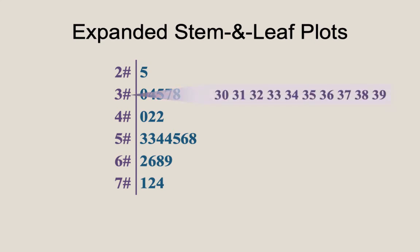Well, let's take the stem for the 30s. This row is meant to record all the data values that are 30, 31, 32, 33, 34, 35, 36, 37, 38, or 39, a total of 10 values.